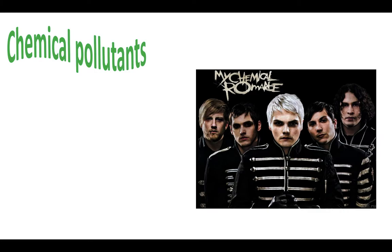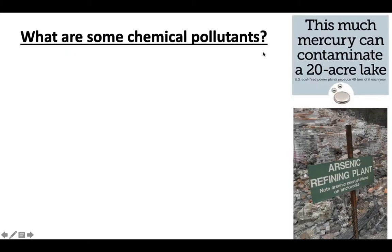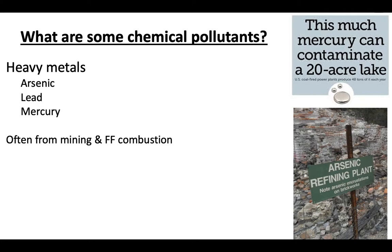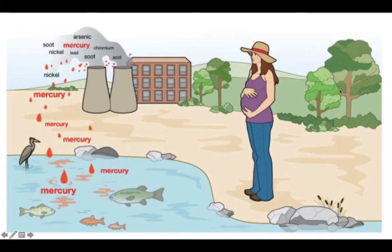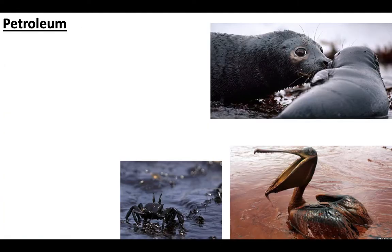Chemical pollutants are what we'll spend most of our time on. These include heavy metals like mercury, lead, and arsenic, which often come from mining or fossil fuel combustion. They can contaminate soil, groundwater, drinking water, and nearby aquatic ecosystems through runoff. It only takes a small amount to pollute an entire ecosystem. When combusting fossil fuels, you can produce heavy metals like mercury that build up in organism tissue and pose risk especially to pregnant women and young children.